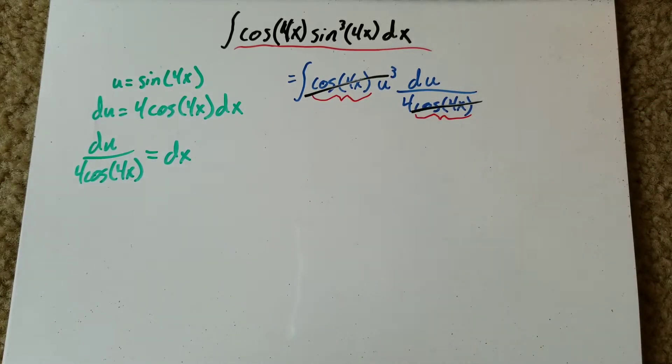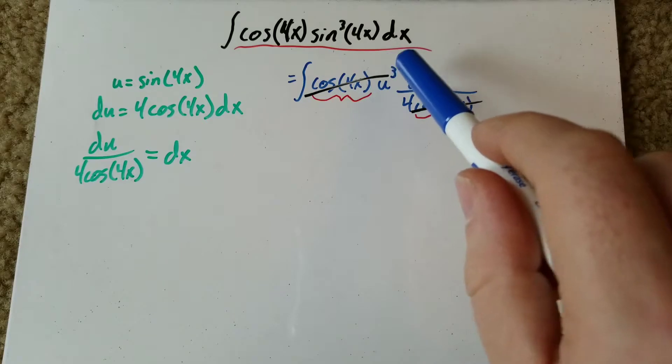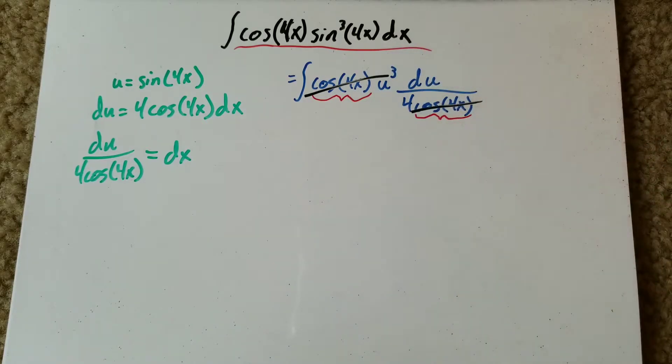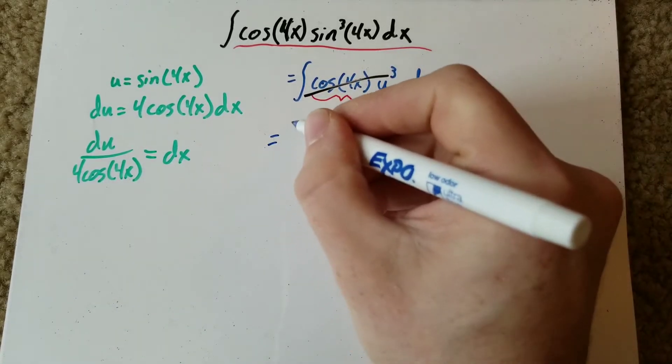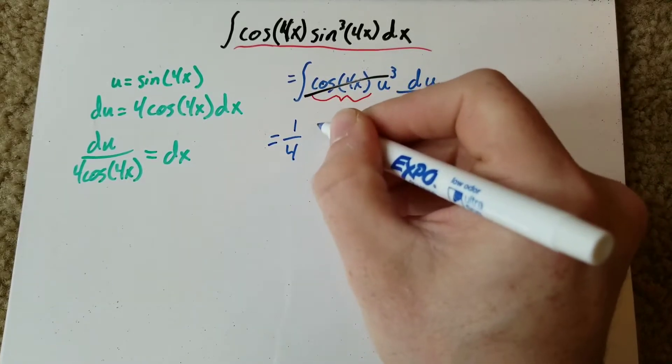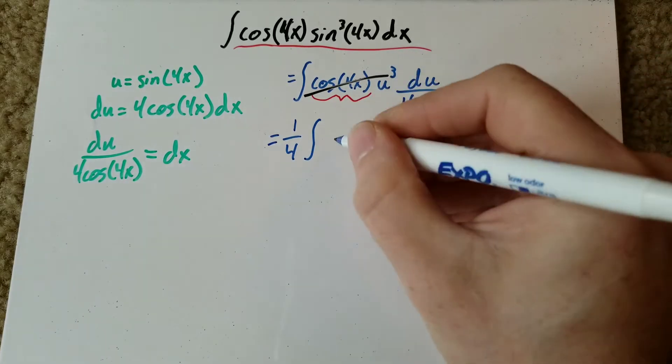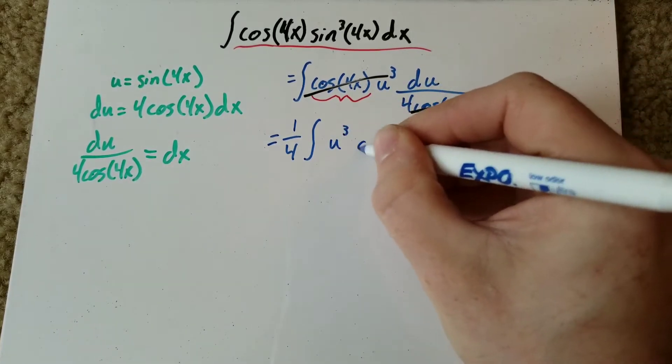So that goes away and that goes away, leaving us with u cubed du over 4. So we're going to pull out our 1/4 in front of the integral sign, 1 over 4, leaving us with just u cubed du.